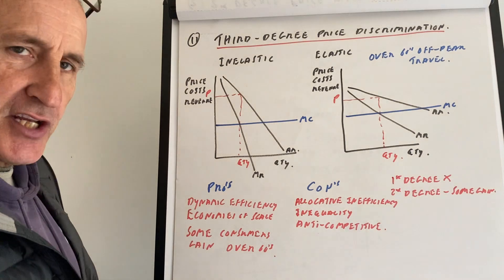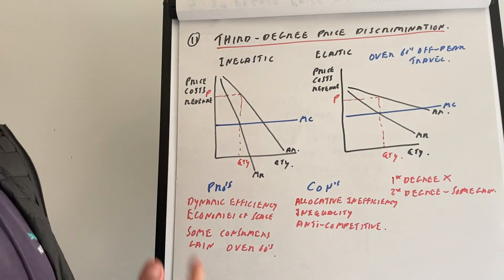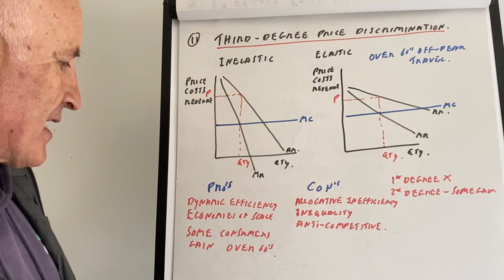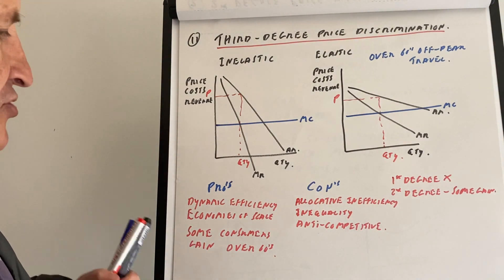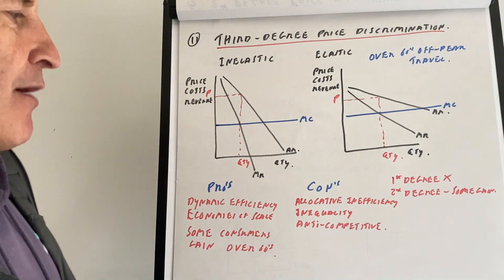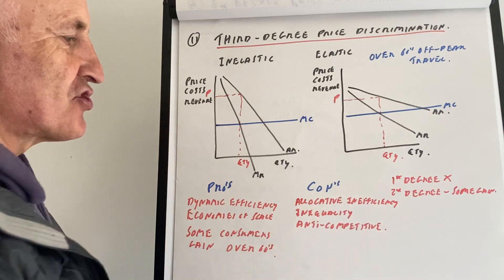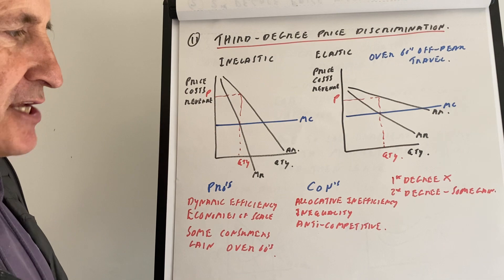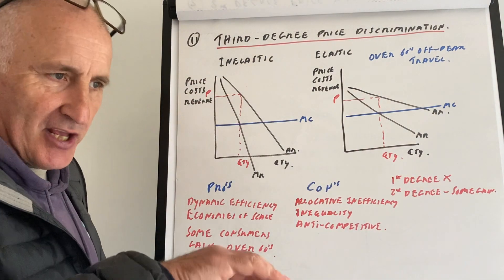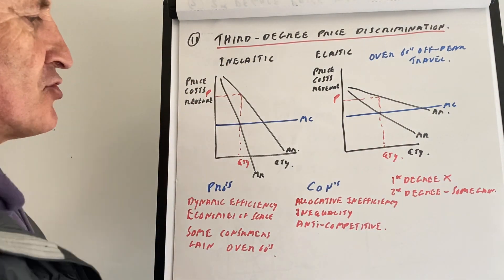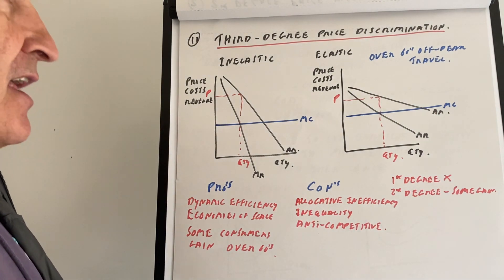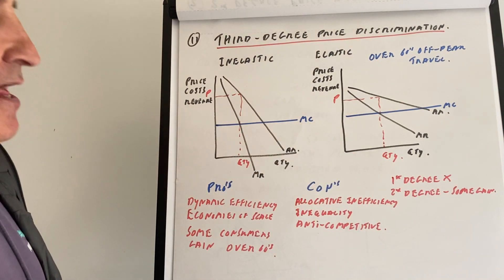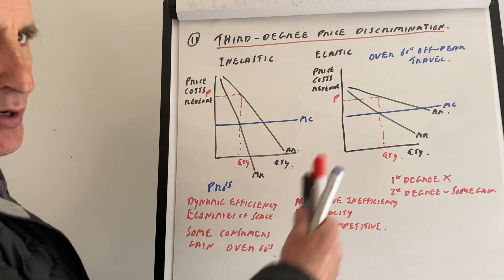The advantages of price discrimination are that the producer will make more profits, leading to more likelihood of dynamic efficiency. They can achieve economies of scale because they're producing more, and some consumers gain, such as the over 60s. However, there is a concept of allocative inefficiency and it may also be anti-competitive, because in certain markets you can charge a very low price — making a lot of profits in some areas while keeping other firms out of the market by charging a low price elsewhere. So first degree is obviously always bad for consumers, second degree means consumers can gain, and in third degree while some consumers will gain, some will lose out.